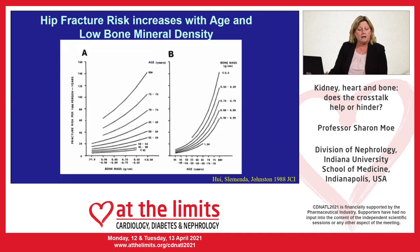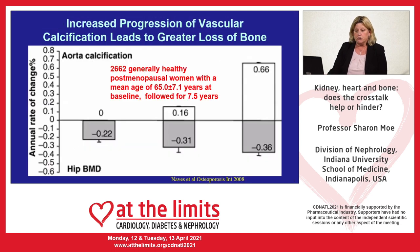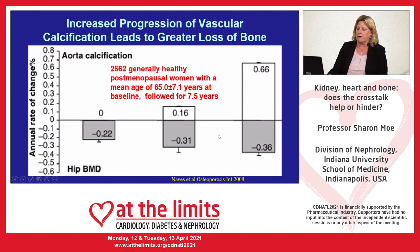We also know that normally with advanced aging you lose bone mass over time, and for every age there is a dramatic rise over the age of 50 in terms of bone loss. So in longitudinal studies, when aortic calcification is measured at the same time as the hip bone mineral density in generally healthy postmenopausal women followed for seven and a half years, the greater the increase in aortic calcification, the greater the decrease in hip bone mineral density.